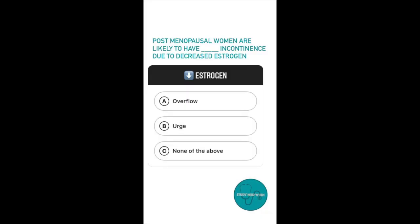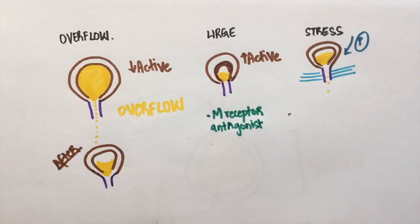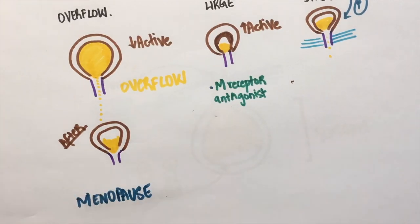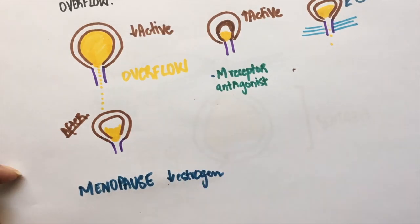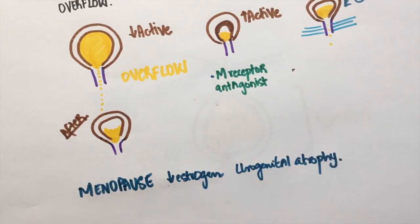Question number three: Postmenopausal women are more likely to have dash incontinence due to decreased estrogen. Option A, overflow incontinence. Option B, urge incontinence. Option C, none of the above. After menopause, women have a decrease in estrogen in their bodies. This decreases elasticity and blood flow to the bladder and the urethra. Ultimately, there is urogenital atrophy.